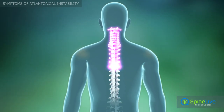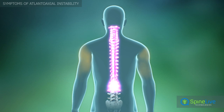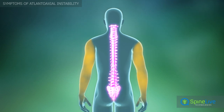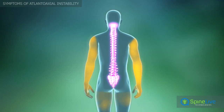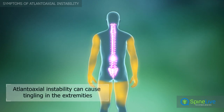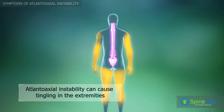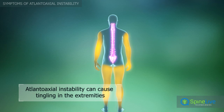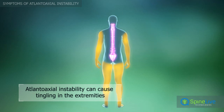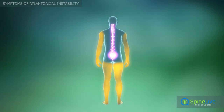Compression of the spinal cord due to atlantoaxial instability produces weakness, spasticity, tingling, and alterations in sensation in the lower and upper extremities.